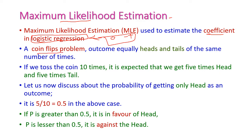Let us take one problem, that is the coin flip problem. Suppose if we toss any coin, we will get either head or tail. If we get head, then it is 1; if we get tail, then it is 0. Suppose if we toss the coin 10 times, then what is the expected outcome? 5 times we will get head and 5 times we will get tail. This is the expected outcome.